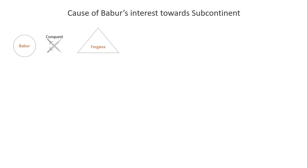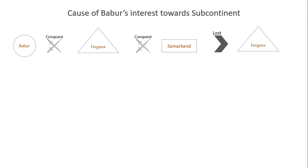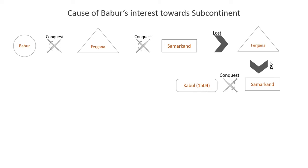Babur conquered the throne of Fargana, which was spread over Kyrgyzstan, Tajikistan and Uzbekistan, at the age of 12. But he faced rebellion. He conquered Samarkand, city of Uzbekistan, after 2 years but lost Fargana soon after. He again fought to recapture Fargana but lost, and also lost control of Samarkand. In 1504, he attacked Kabul and succeeded, which was another putative rule of Abdul Razak Mirza.